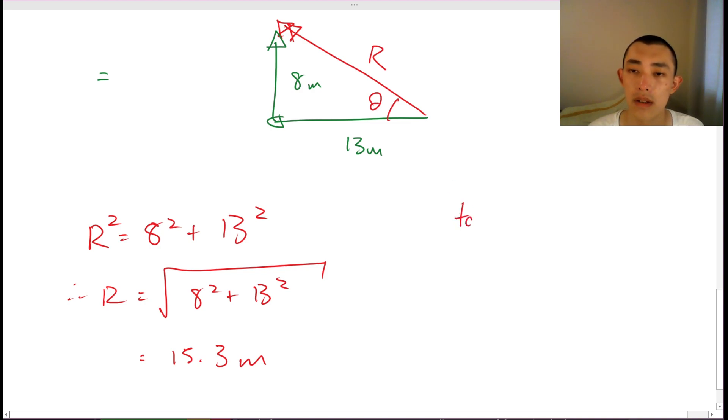Tan theta is equal to 8 over 13. Therefore, theta is equal to tan inverse of 8 over 13, which is equal to 31.6 degrees.